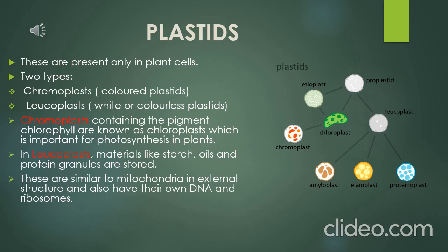In the picture, the chloroplast is shown in green color. Leucoplasts are again of two types: amyloplasts, which store starch; elaioplasts, which store oils; and proteinoplasts, which store protein granules.